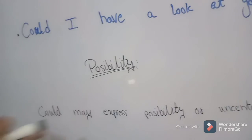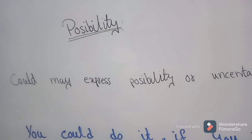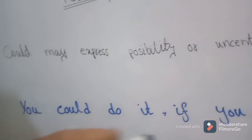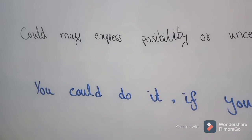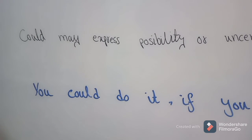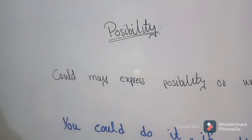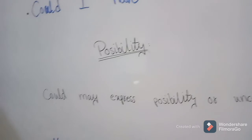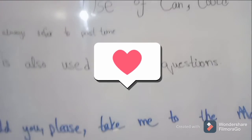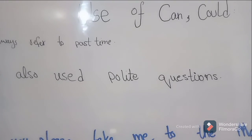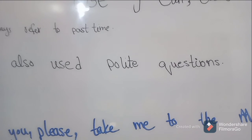Could may also express possibility or uncertainty. For example: you could do it if you tried hard. Or: if my brother was here, we could have solved this problem together. So that was a short video about can and could. Like my videos, subscribe to my YouTube channel, press the bell icon, and meet you in the next video. Stay home, stay safe. Allah Hafiz.